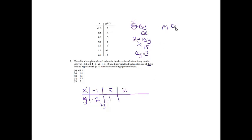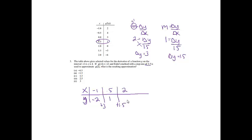For the next step, m equals delta y over delta x. At x equals 0.5, looking up the chart gives a derivative of 1. So 1 equals delta y over 1.5, giving delta y equals 1.5. Adding 1.5 to 1 gives 2.5. So g of 2 is approximately 2.5, which is choice D.